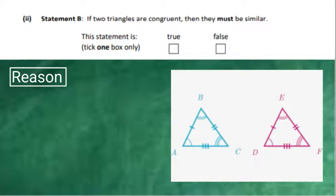So the reason here is that the answer is true. It's true that if they are congruent, they must be similar. And the reason is that the angles will be the same. And that's just the condition for similar triangles.